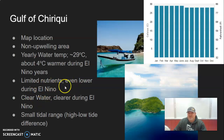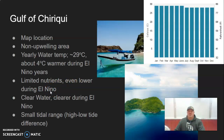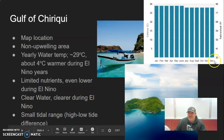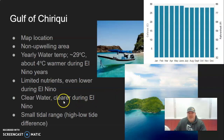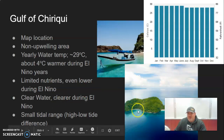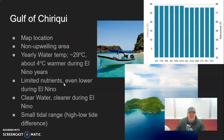During El Niño events — which would happen around January, February, March, and into late fall and early winter like November and December — there are even fewer nutrients available because that warm water caps the cold water that would typically come up. The water can get even clearer than usual. It's a popular destination for vacationers; water clarity is outstanding — you can see down 100 to 150 feet — but the nutrient loads aren't high, so fish populations aren't nearly as high as other places.